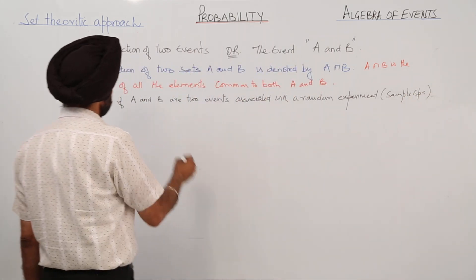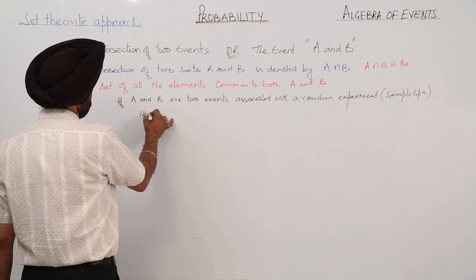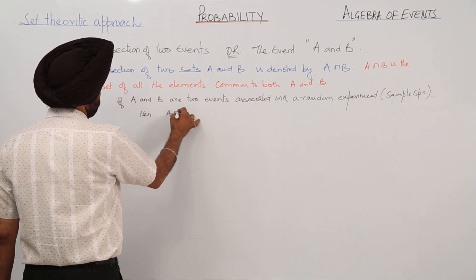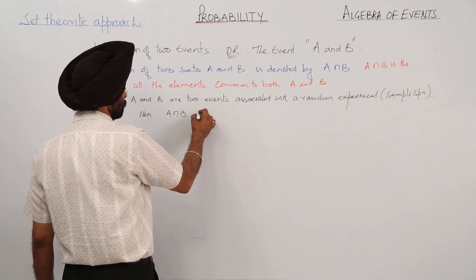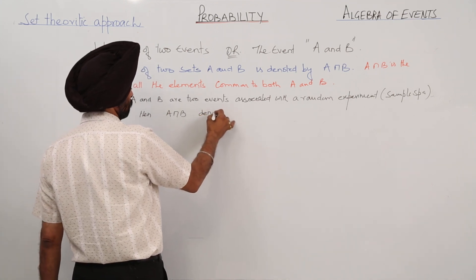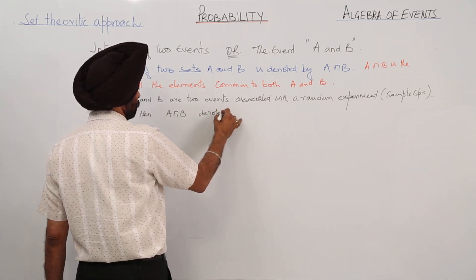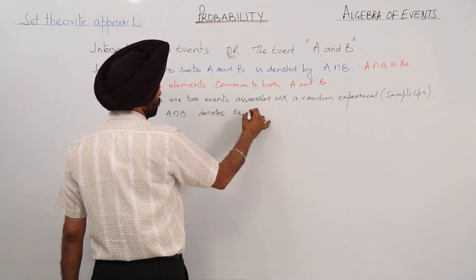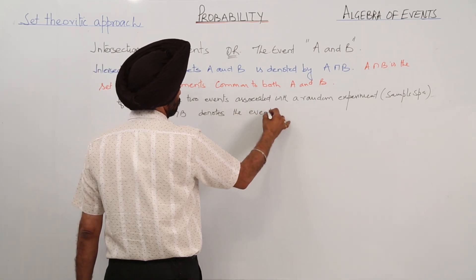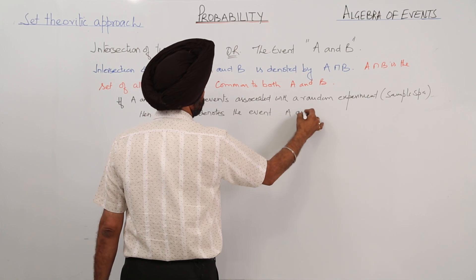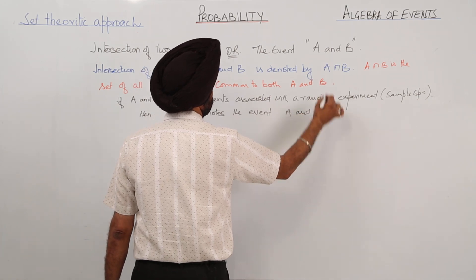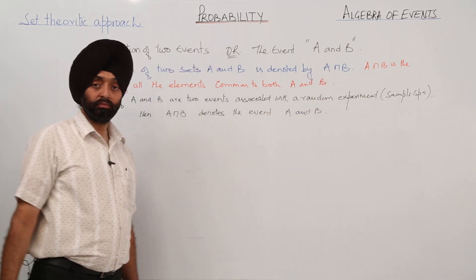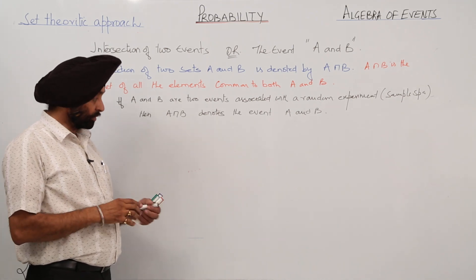Then A intersection B denotes the event A and B. Now, example.